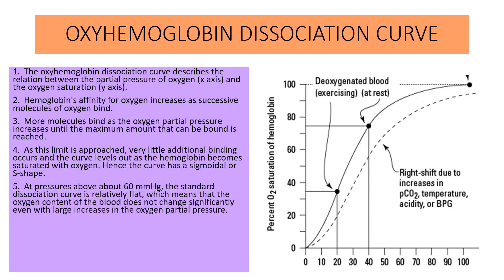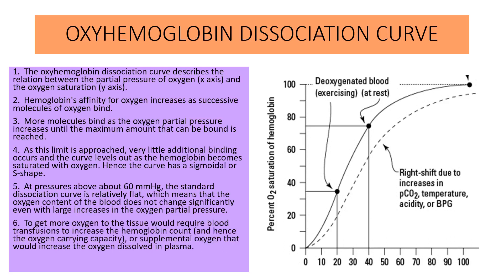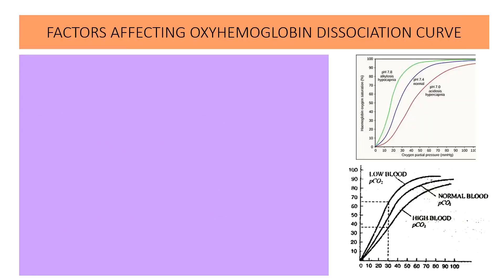At partial pressures above 60 mmHg, the standard dissociation curve is relatively flat. This means that the oxygen content of the blood does not change significantly even with large increases in oxygen partial pressure. To deliver more oxygen to the tissues would require either a blood transfusion to increase the hemoglobin count and hence the oxygen carrying capacity, or supplemental oxygen that would increase the oxygen dissolved in the plasma.